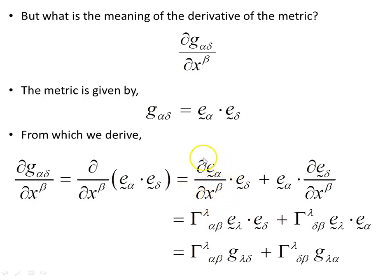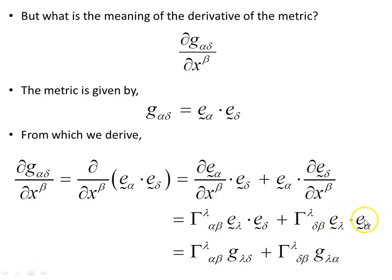By definition, the partial derivative of a basis vector is equal to the affine connection times that basis vector. The scalar products of basis vectors can be written in terms of the metric tensor. So the partial derivative of the metric tensor is equal to the sum of affine connection terms contracted with the metric components.